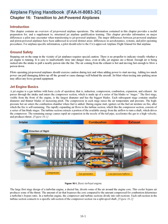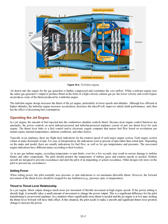The large first-stage design of a turbofan engine — a ducted fan — diverts some air around the engine core. This cooler bypass air produces some thrust. The bypass ratio is determined by the amount of air bypassing the core compared to the amount compressed for combustion. In a turbofan engine, the compressor and turbine sections divide into subsections connected via split spool shafts. The turbofan design increases thrust particularly at lower speeds and altitudes, increases acceleration, decreases the takeoff roll, improves initial climb performance, and often decreases fuel consumption.